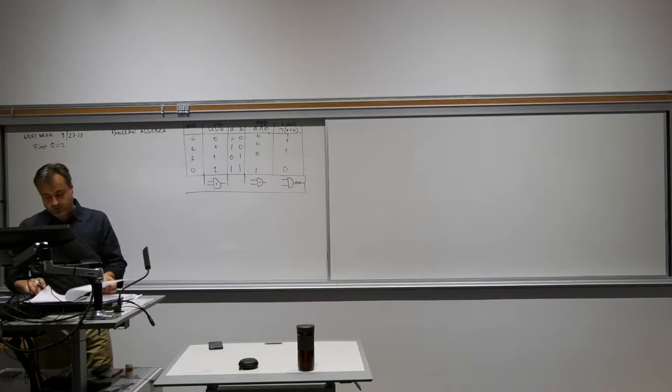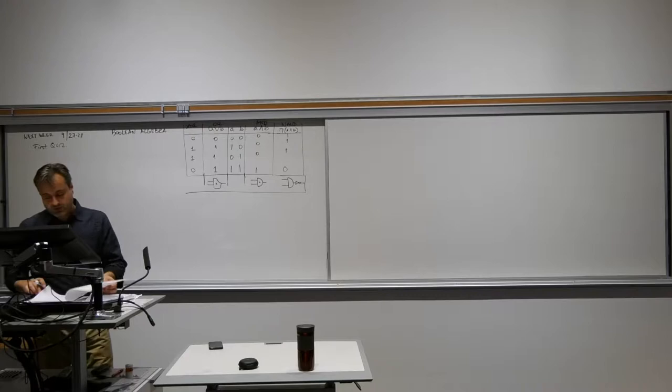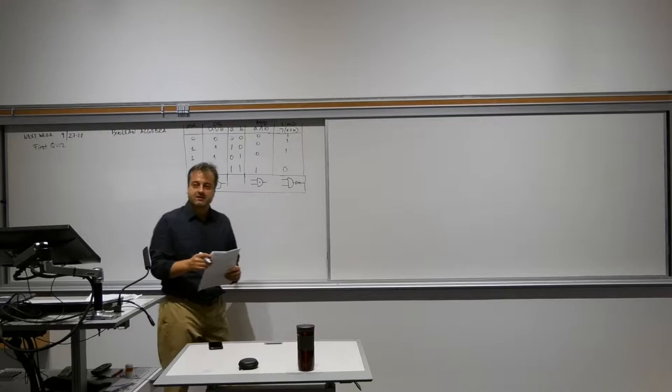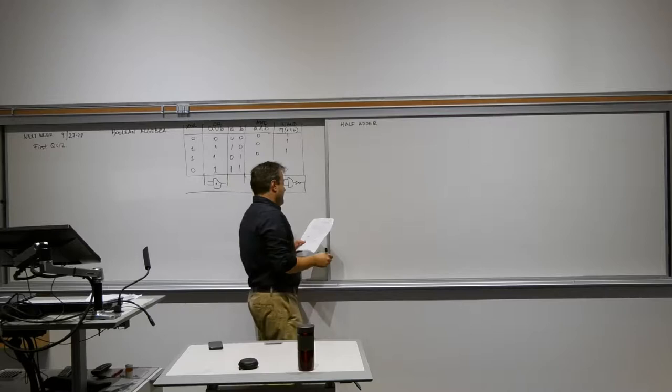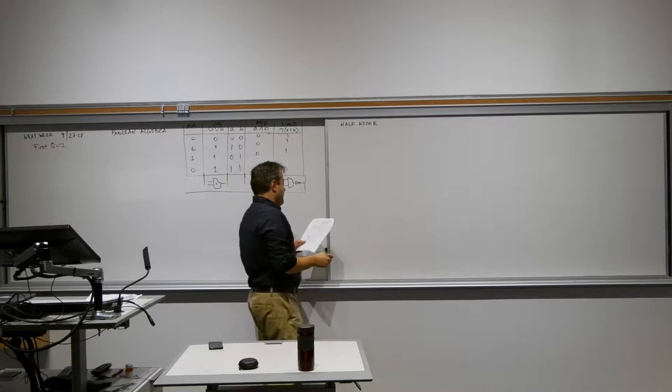What I want to do today is a piece of a circuit that goes into processors. It's very basic stuff, but that's how processors kind of operate. We're going to do first what's called a half adder — that's for addition. We have A and B as the inputs.